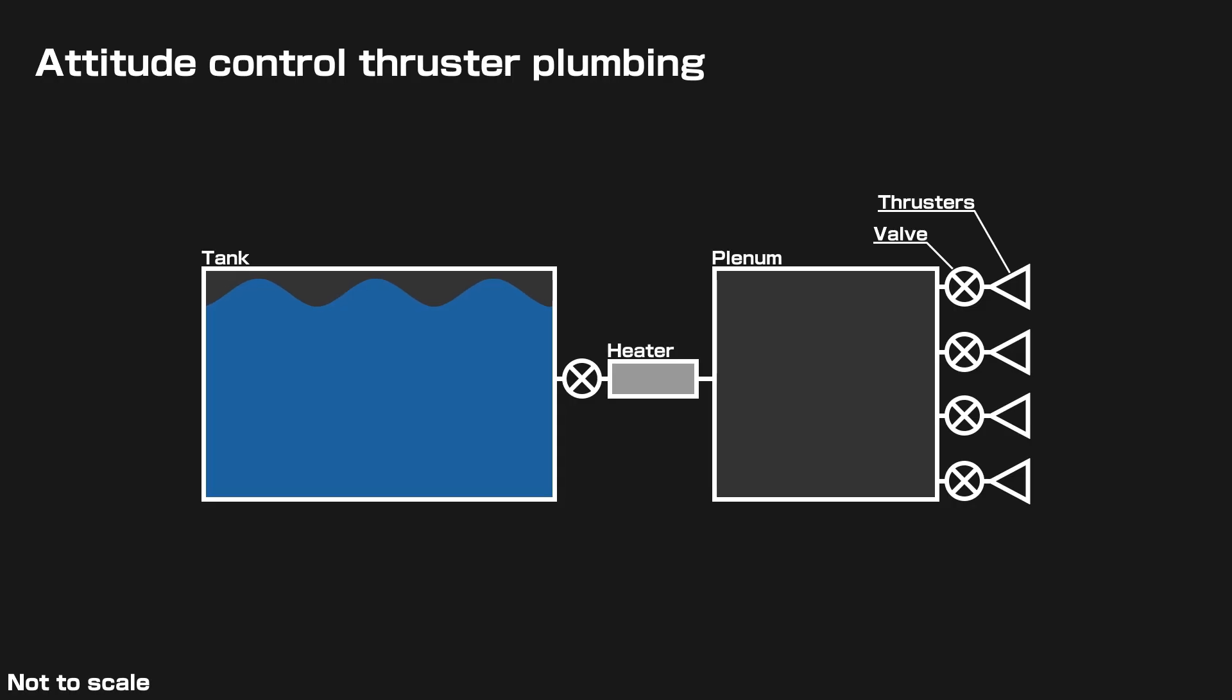So what happened? Engineers at JAXA quickly figured out that the attitude control thrusters were the most likely culprit. The fuel for these thrusters is stored as a liquid in a tank. When needed, a valve is opened and a heater is activated to put a small amount of gaseous fuel in a small tank called the plenum. Each attitude control thruster unit has four valves for four different thrusters.